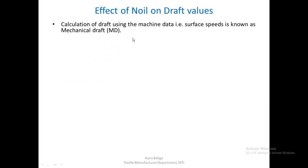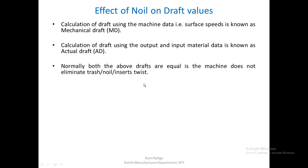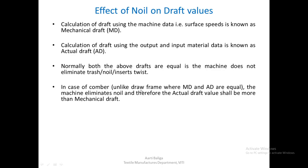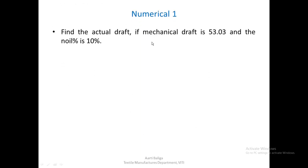Let us now see the effect of noil on draft values. Calculation of draft using machine data — that is, from surface speeds — is known as mechanical draft. Calculation of draft using the output and input material data is known as actual draft. On machines that do not eliminate trash or noil and do not insert twist, actual draft and mechanical draft are equal. But in the case of the Comber, unlike the drawframe, the machine eliminates noil and therefore the actual draft value shall be more than the mechanical draft value. The formula is: actual draft equals mechanical draft multiplied by 100, divided by (100 minus noil percent).